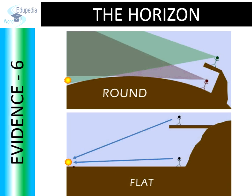Sixth evidence: The Horizon. The horizon is the point where the sky and land appear to meet. If we observe the sunset from two different points on a mountain, we will find that the Sun sets early if we see it from the bottom of the mountain, while at that time we will still be able to see the Sun from the top of the mountain. This is only possible if the Earth's surface was curved.